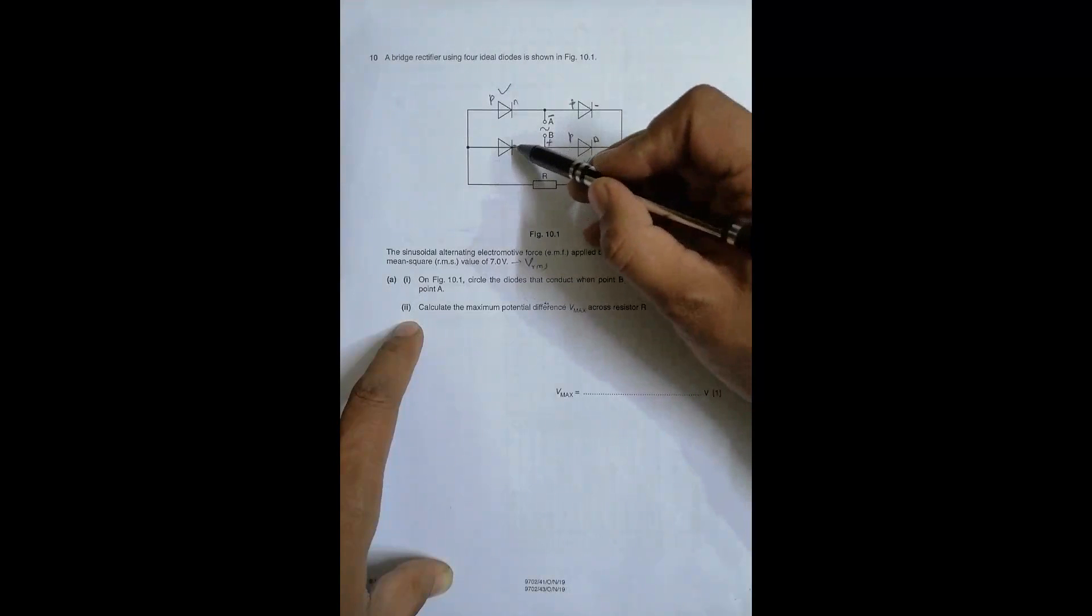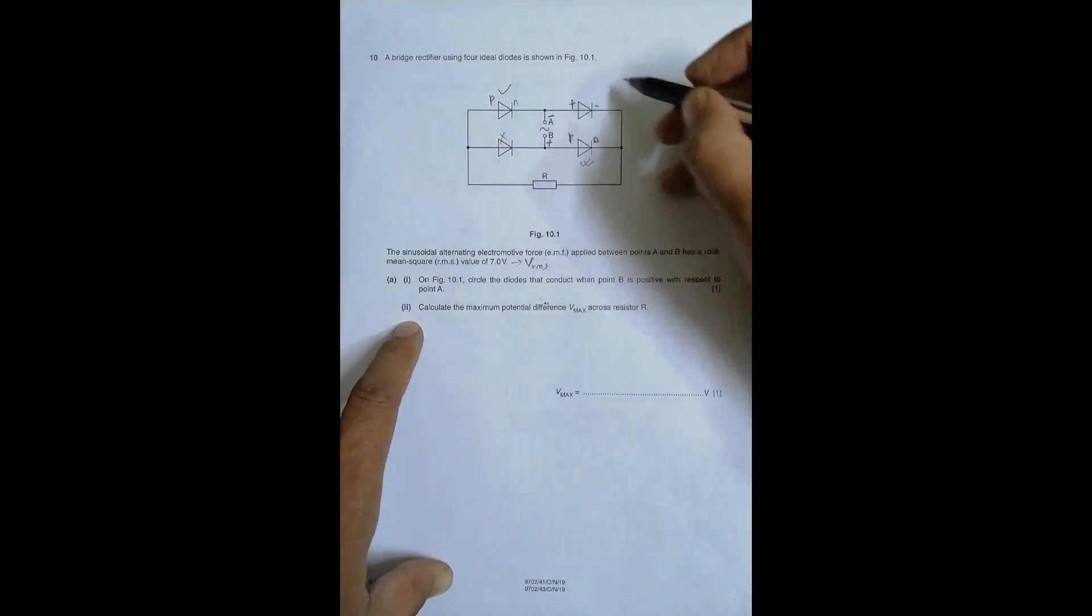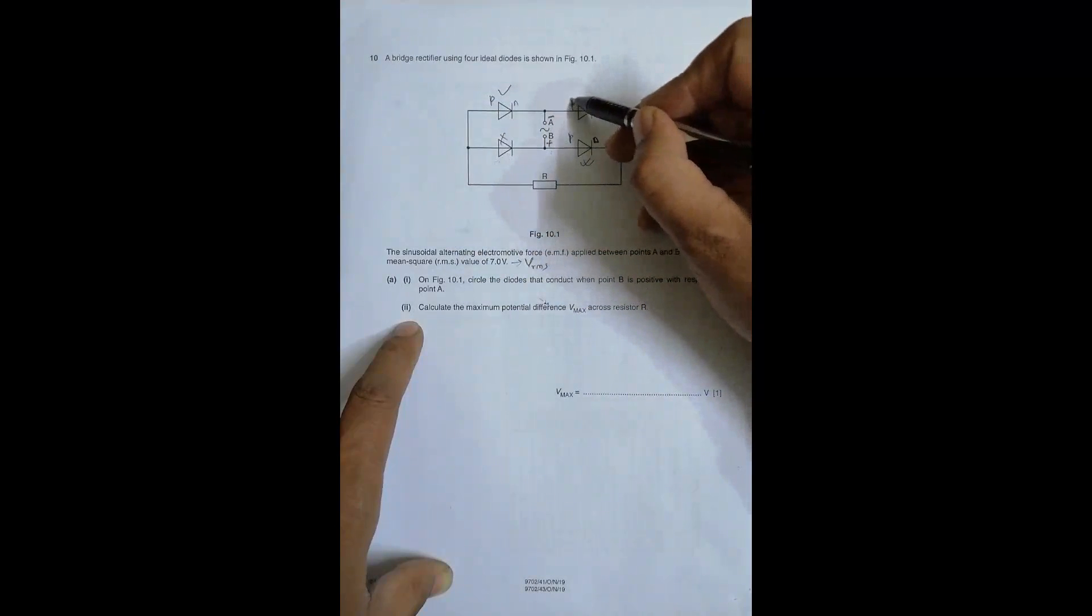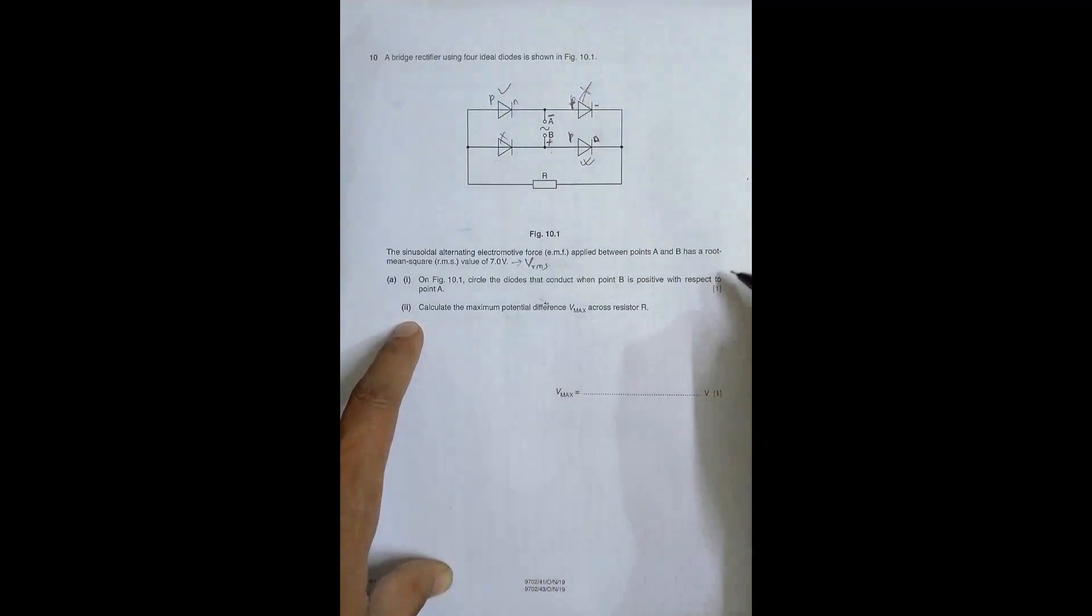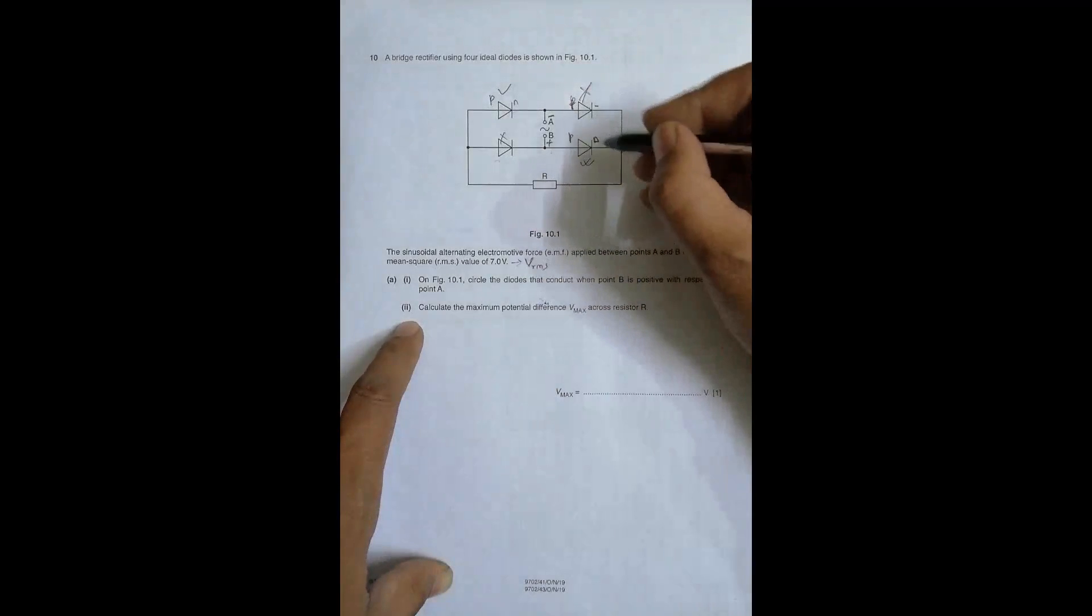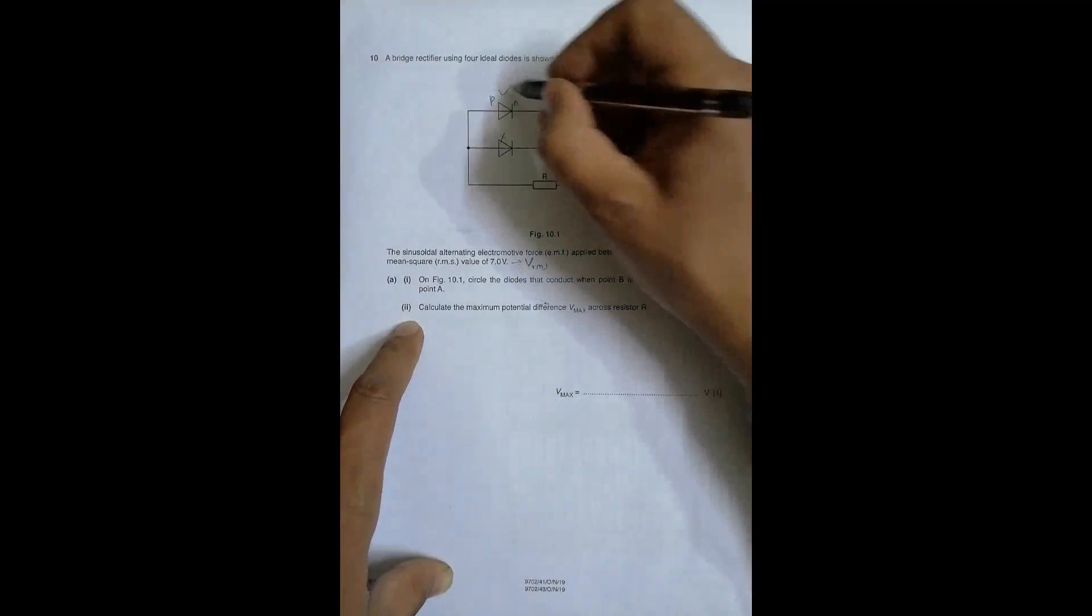And if we consider other diodes, so it is plus here, plus in contact with this. So again, this does not conduct. And here minus contact with this P, so this does not conduct. So anyway two diodes will conduct and two will not conduct. So we have to circle this. So circled, circled and circled.